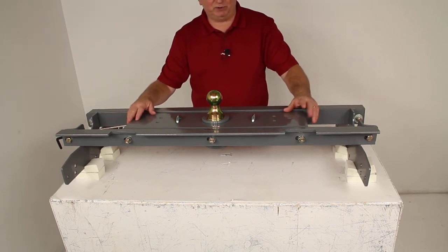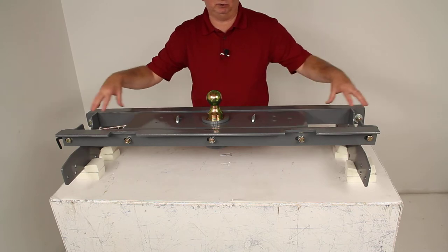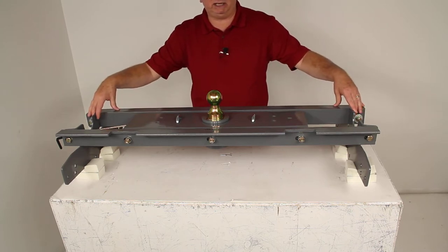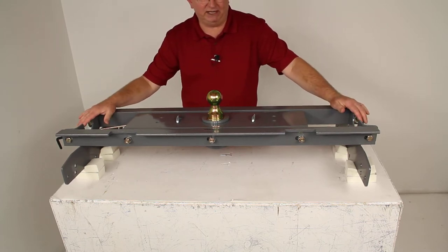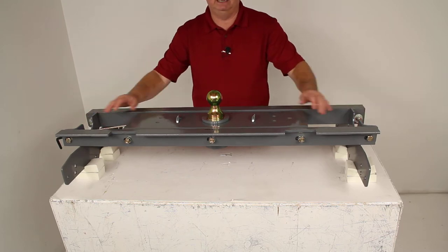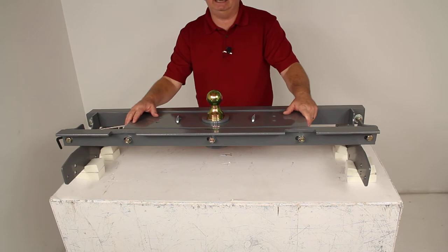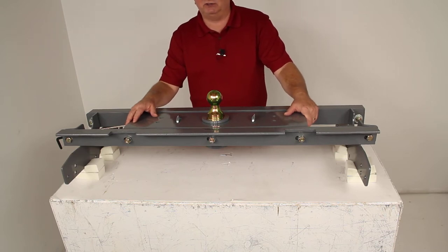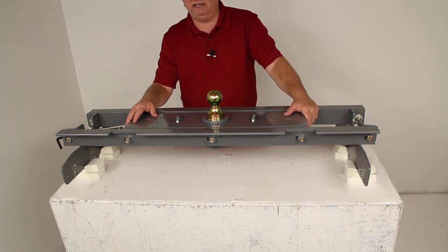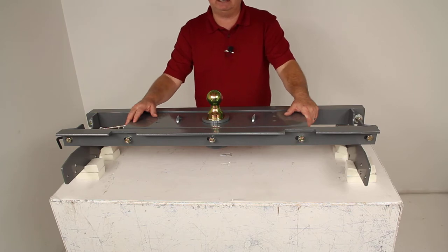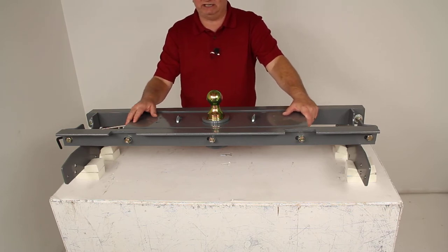For demonstration purposes, I have the hitch installed to the custom installation kit. This will give you an idea of what it would be like underneath the bed of your truck. This is a custom installation kit designed to fit the 1997 to 2003 Ford F-150 and F-250 light duty trucks and the 2004 Heritage Series trucks.